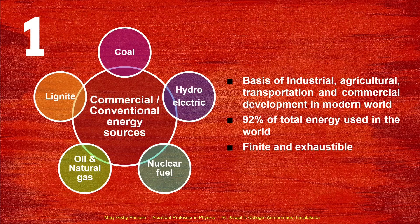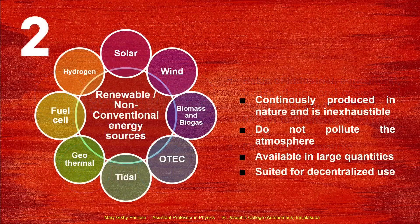The next category of energy sources are the renewable or non-conventional energy sources. The different types are solar energy, wind energy, biomass and biogas, OTEC — ocean thermal energy conversion — tidal energy, geothermal energy, and chemical energy by fuel cells and hydrogen energy. These energies are clean energy sources, continuously produced in nature, and hence can be available forever — they are inexhaustible. They are pure because they do not pollute the atmosphere and are available in large quantities. These energy sources are particularly suited for decentralized use, for proper distribution of energy.